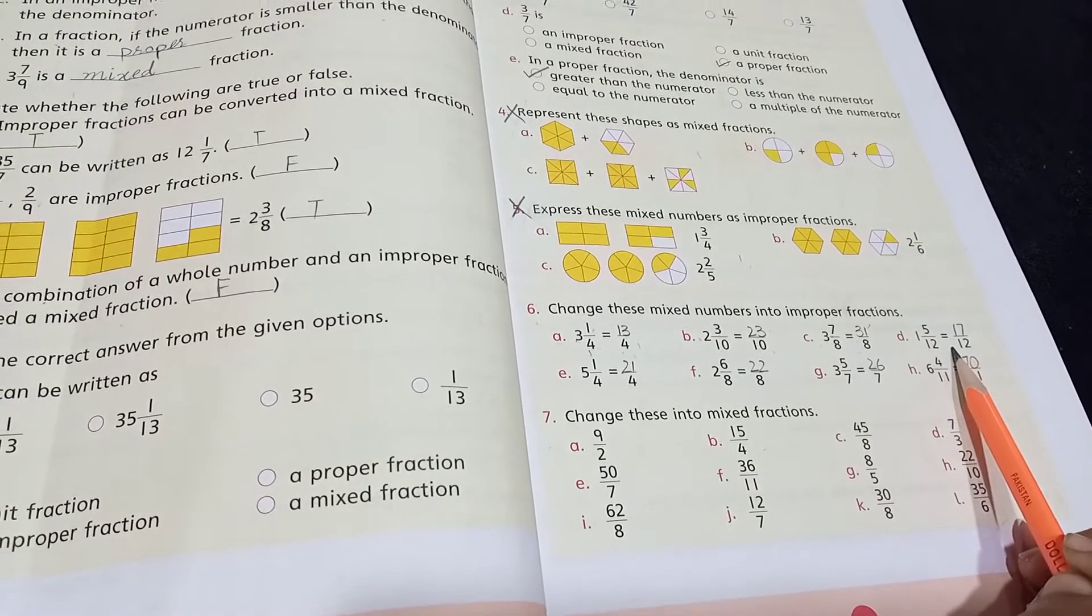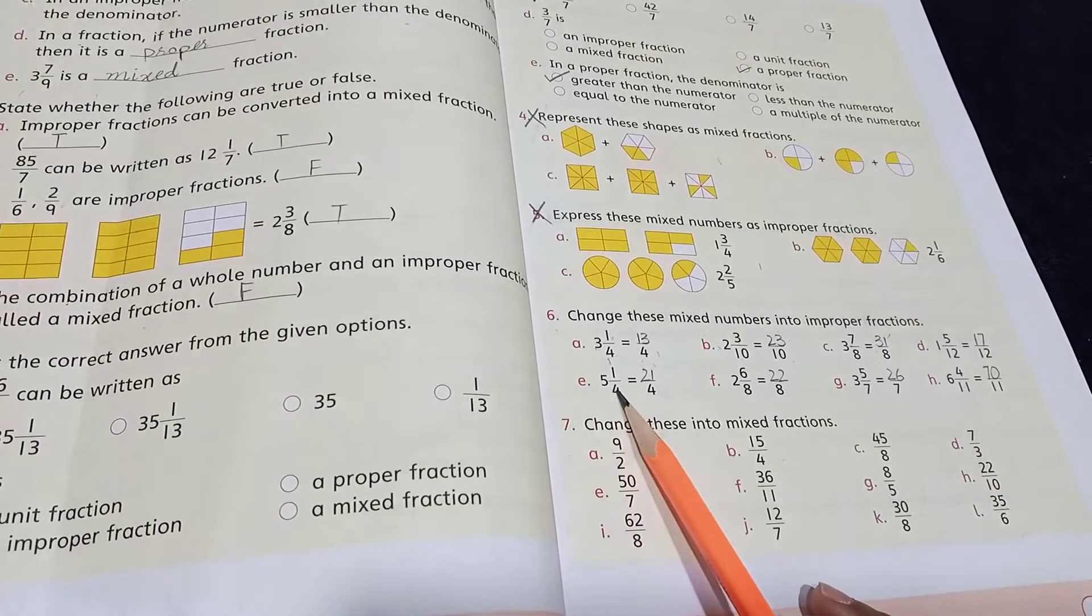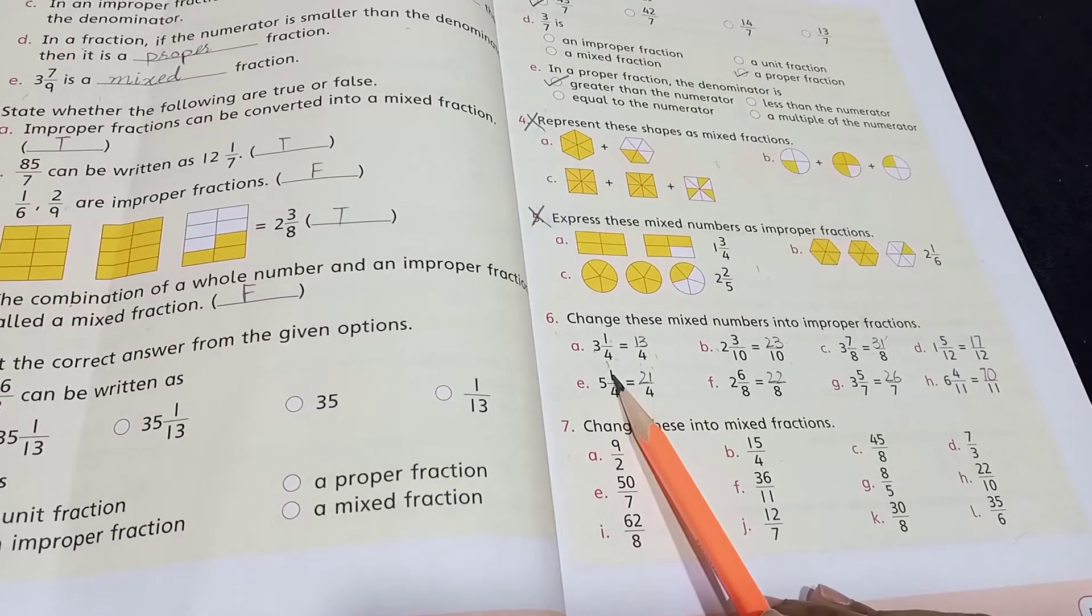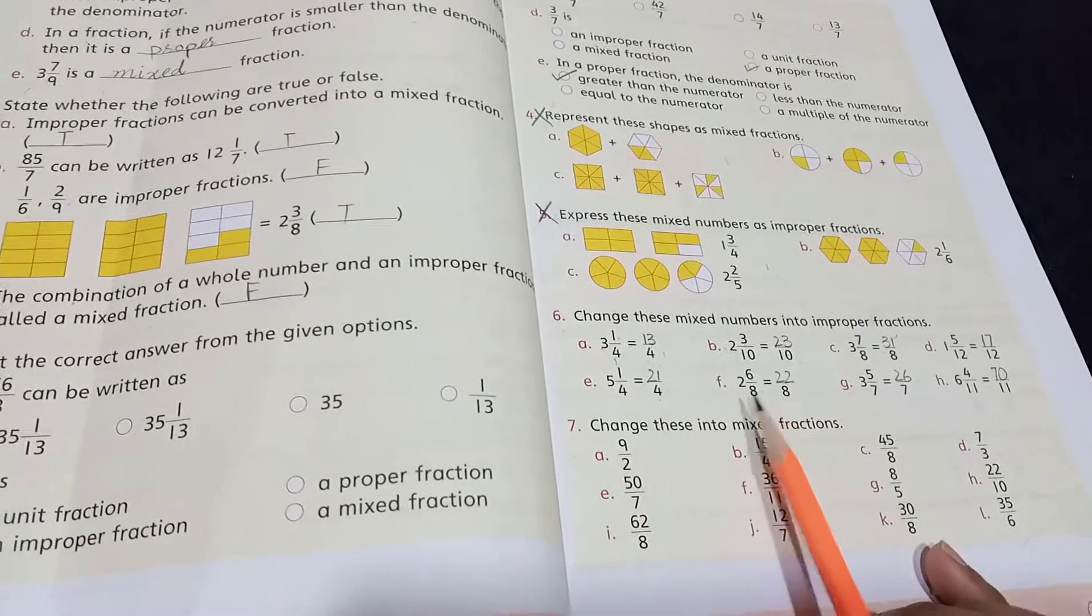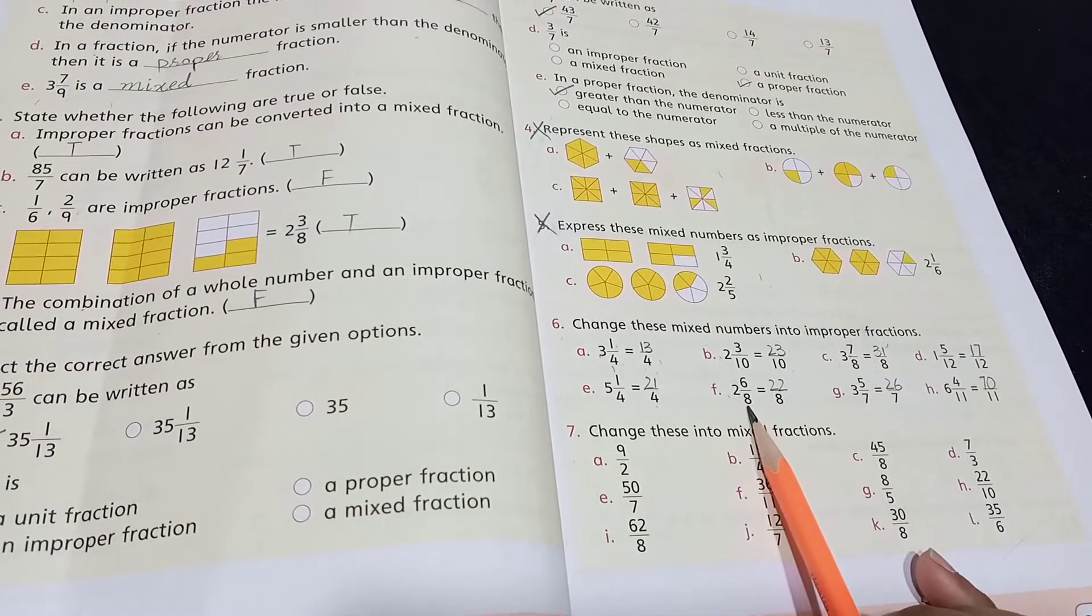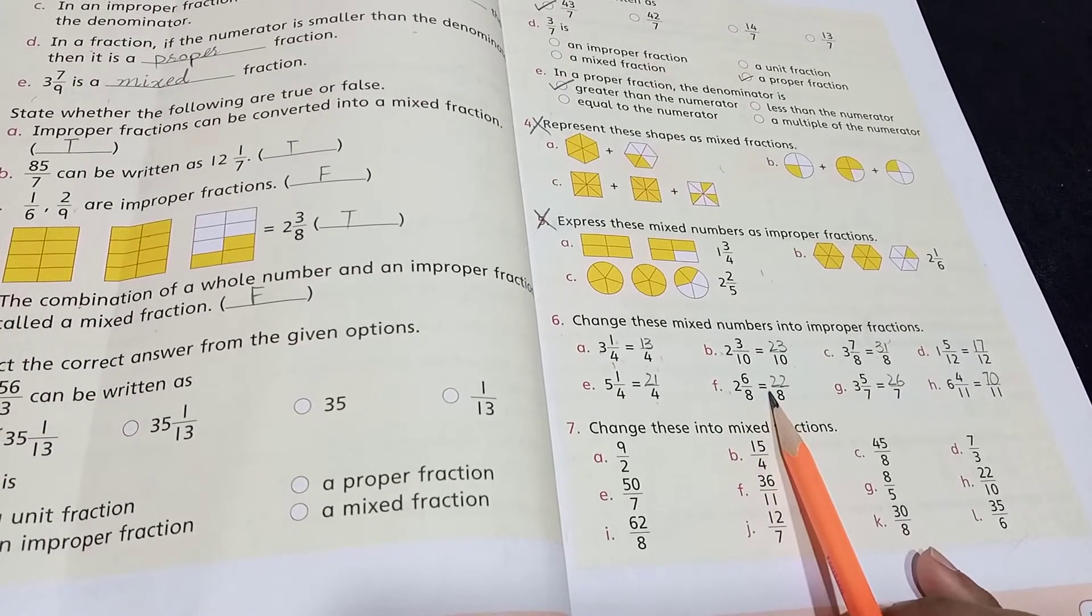Then 5 times 4 are 20. We will add 1, so it will make 21 by 4. 8 times 2 are 16. 16 plus 6, so the answer will be 22 by 8.